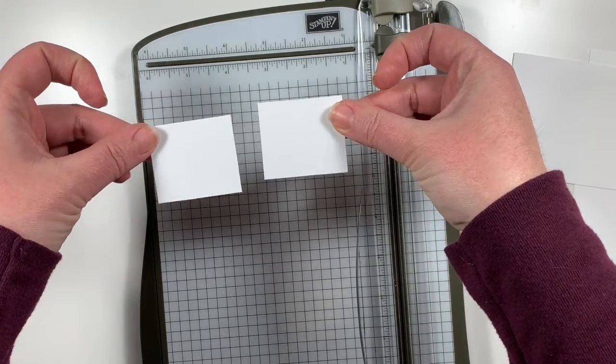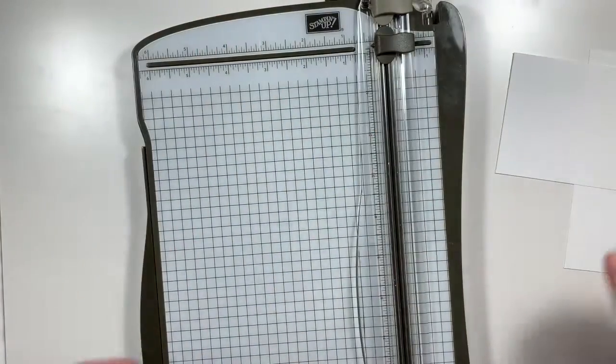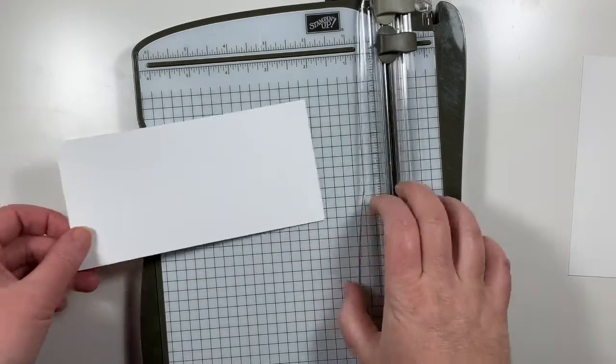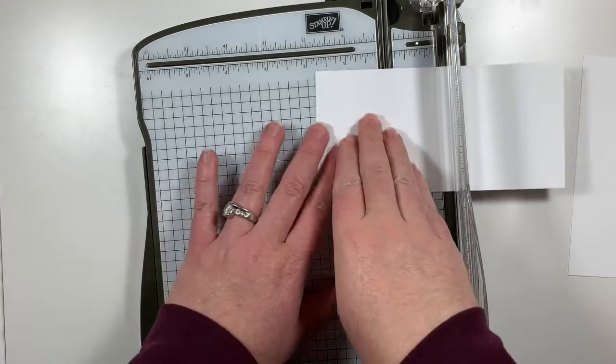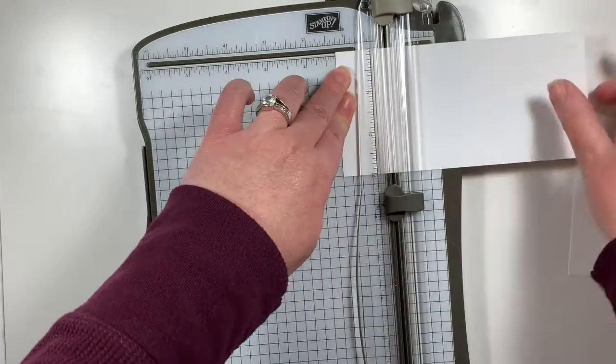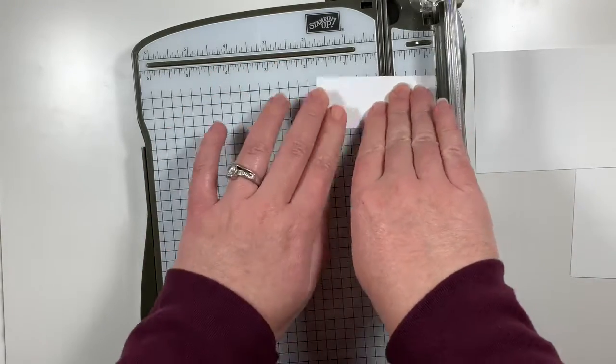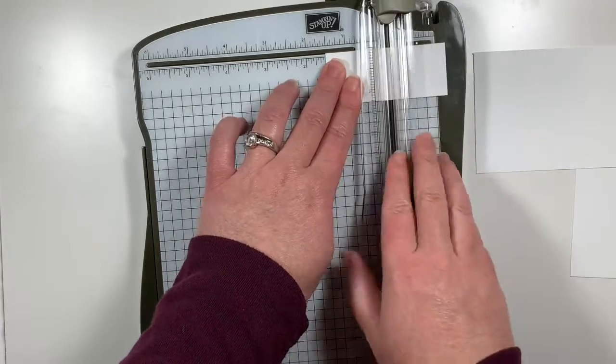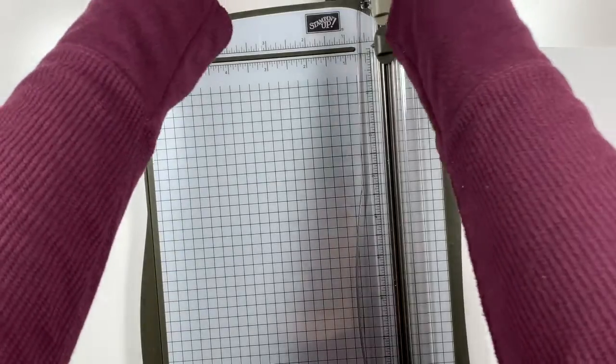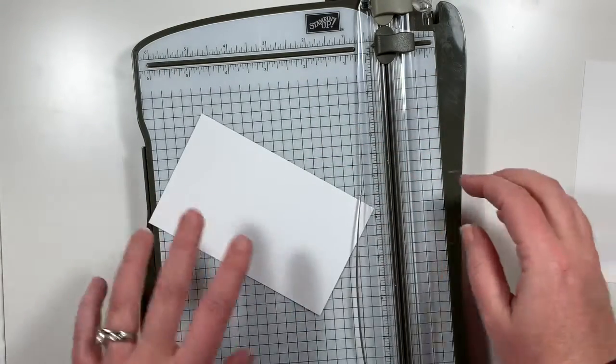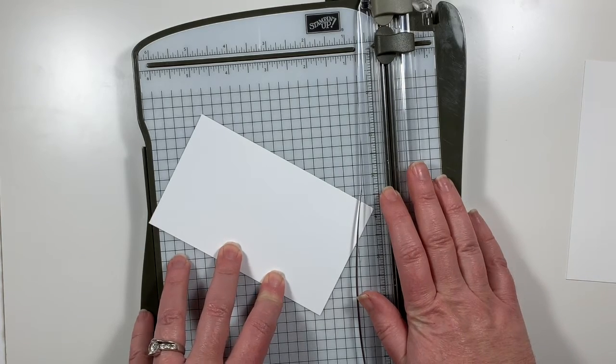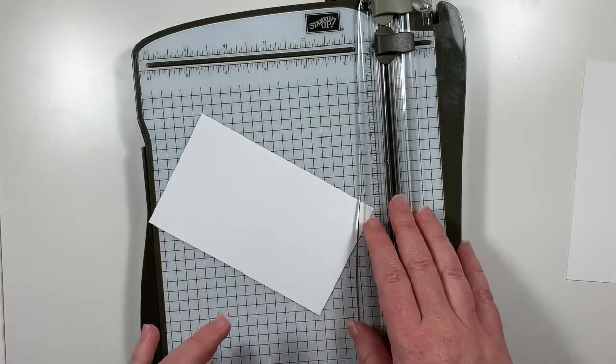Now I need two pieces that measure one and a half by one and three quarter. So because this is three inches wide, I'm going to cut it at one and three quarter first. And then I'm going to rotate it and cut it at one and a half and that will give me two equal pieces. Now I'm going to cut two pieces that measure one and a quarter by one and a half. So I'm going to measure this at one and a quarter. Again, it's three inches wide. So when I rotate it and cut it at one and a half, I'll have two equal pieces. And these will go on top of the last two pieces we just cut.